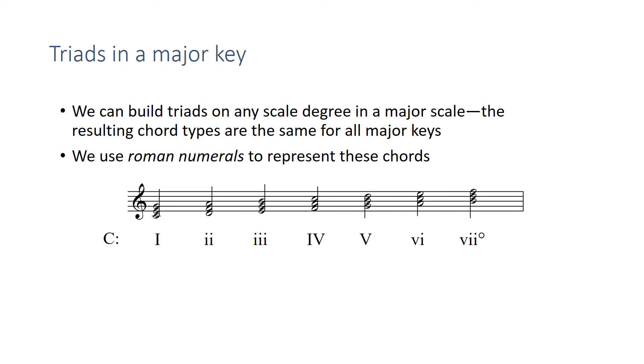And as we know, above the B we normally get a diminished triad. So in the key of C, my chord over scale degree seven is going to be diminished. So we have major one, minor two, minor three, major four, major five, minor six, and diminished seven.